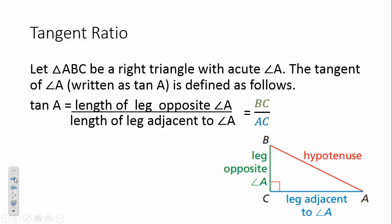In a right triangle, we have one right angle and two acute angles. So triangle ABC is a right triangle with acute angle A. Just making sure that we're not talking about the right angle. The tangent of angle A is defined by the length of the leg that is opposite angle A divided by the length of the leg adjacent to angle A. So if you want to abbreviate and just say tangent of A equals opposite over adjacent, that can save you some writing.